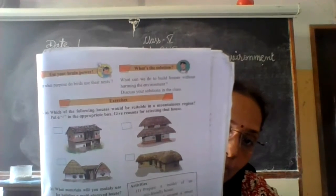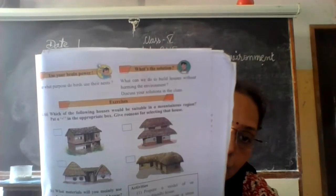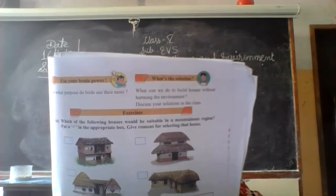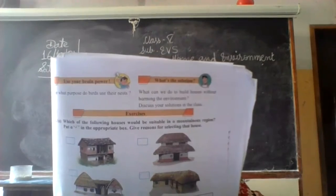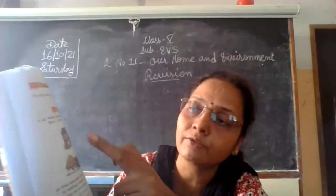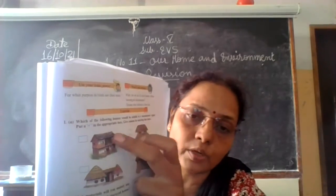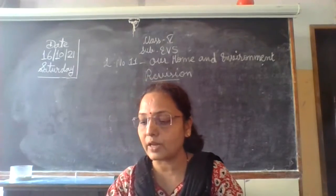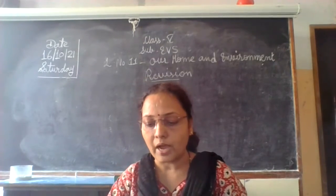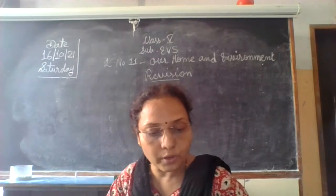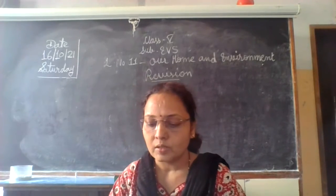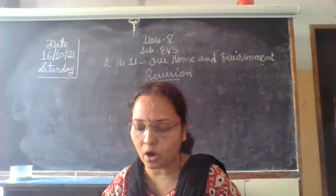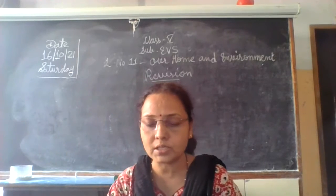Which house is suitable in the mountain region? Number one — the first one is suitable for the mountain region. This house is made up of natural material available in the mountains, that is stone, and it is strong enough to withstand mountainous winds.